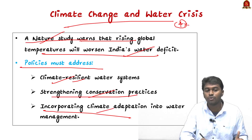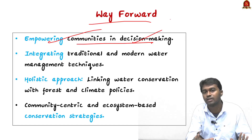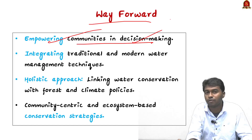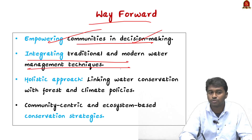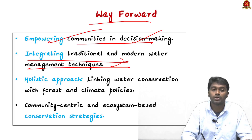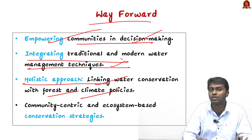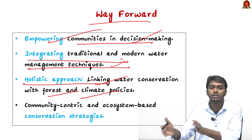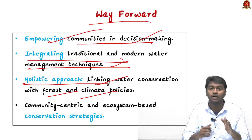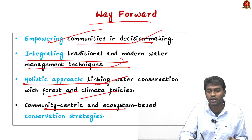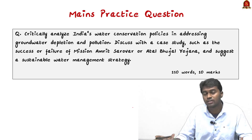Key way-forward recommendations include: empowering communities in decision-making, since local communities currently lack real authority despite being present in conservation activities; integrating traditional knowledge with modern water management technology; adopting a holistic approach that links water conservation with forest and other climate policies, acknowledging the interdependence of water, land, forest, soil, and biodiversity; and moving beyond human-centric approaches toward community-centric and ecosystem-based conservation strategies.